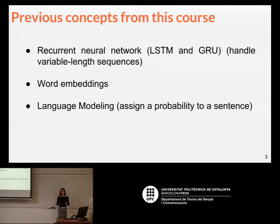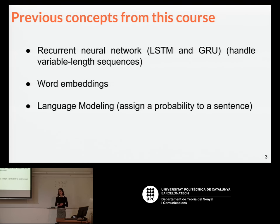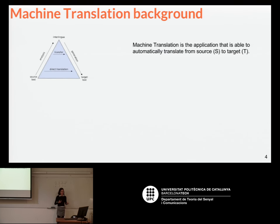Previous concepts from this course are the same as before in the language modeling: recurrent neural networks, word embeddings, and language modeling. So lots of things that I'm going to say are already explained, but let's talk a little bit about the context of machine translation.